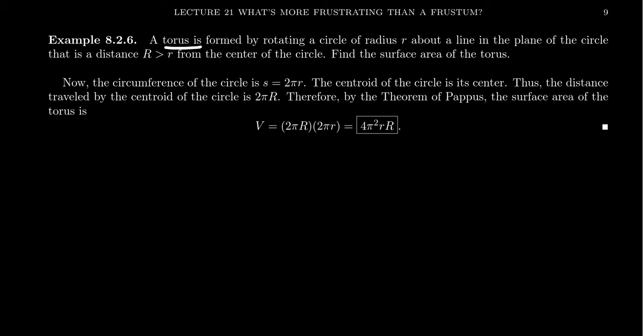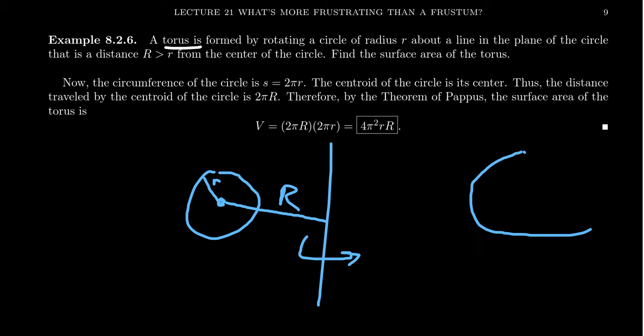If you have some circle like this and you rotate around some line like so, this is a circle whose radius is r. The distance of the center to the axis is capital R. If you rotate this thing around the axis, you get a so-called torus.